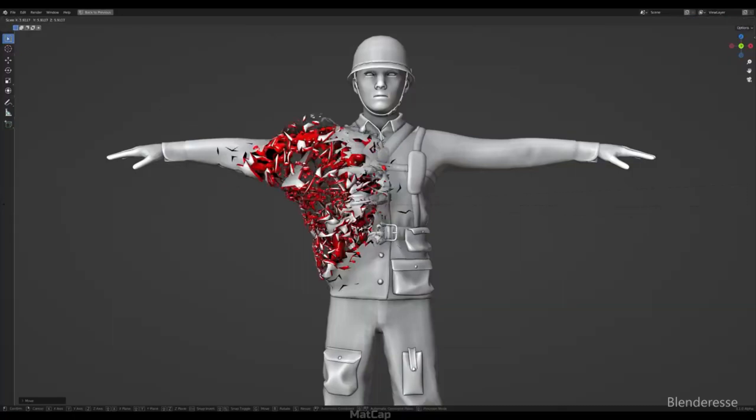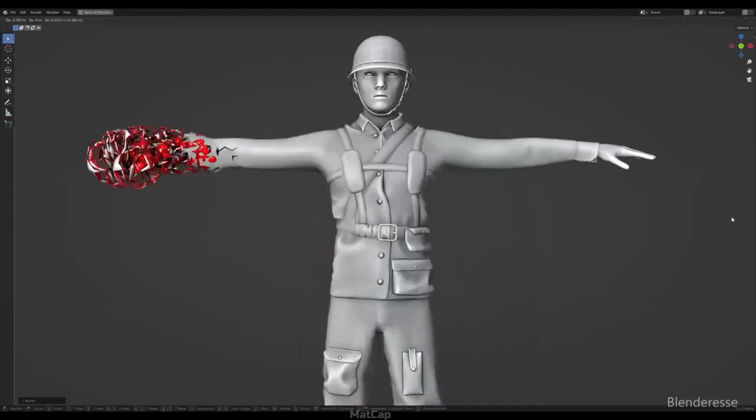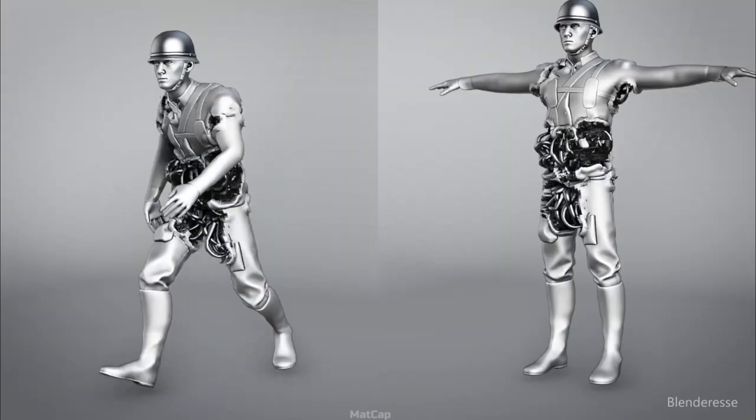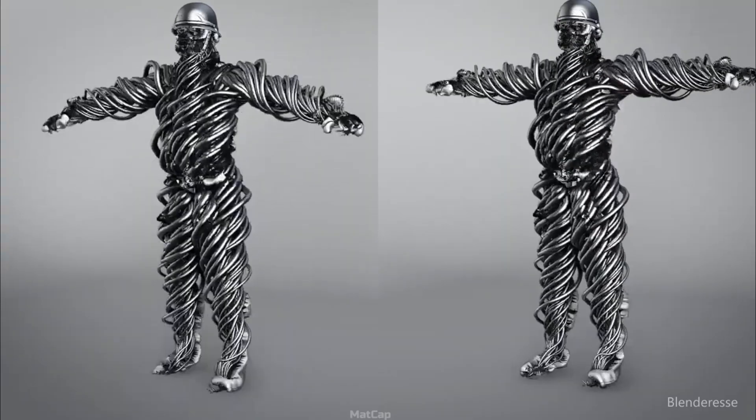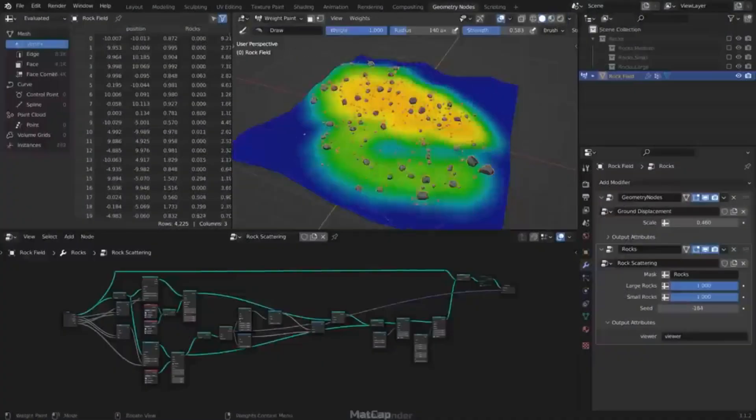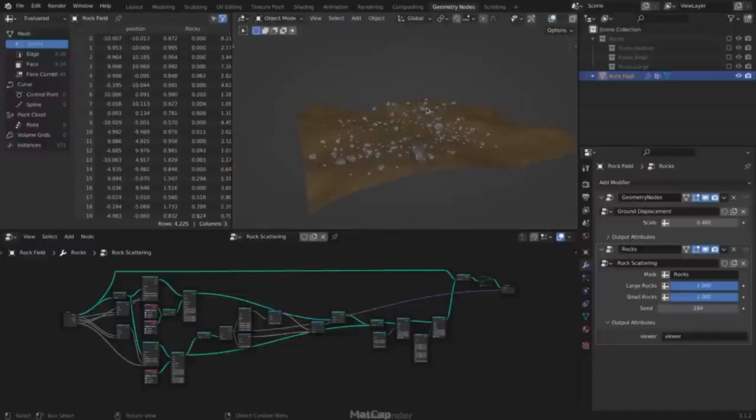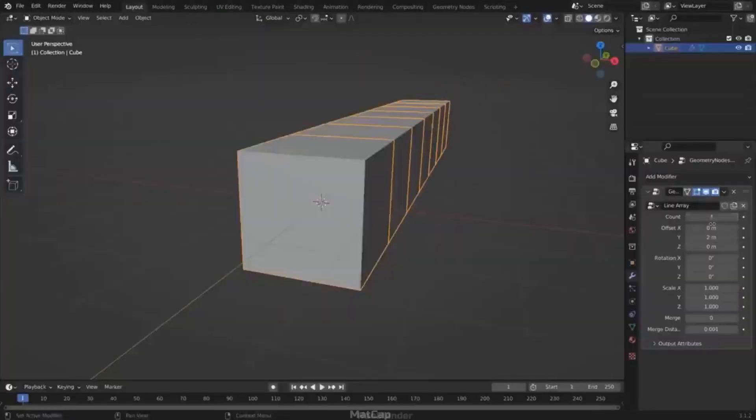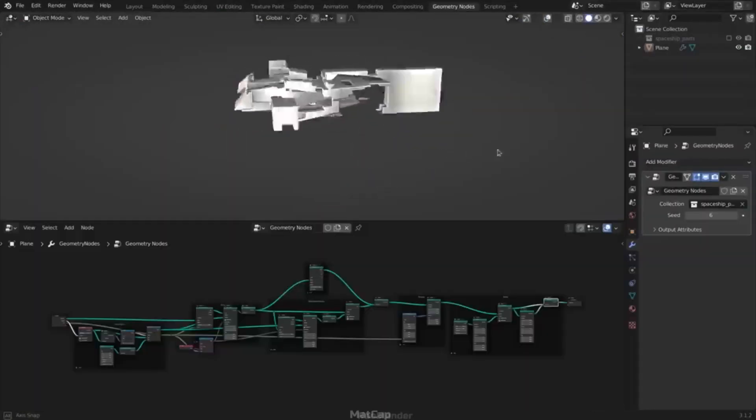Geometry nodes are also useful for generating different abstract forms, whether for concepts or in the process of 3D design. With the help of geometry nodes, you can create systems for distributing objects on surfaces, advanced array modifiers and much more.